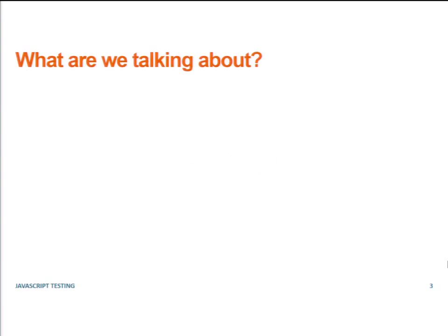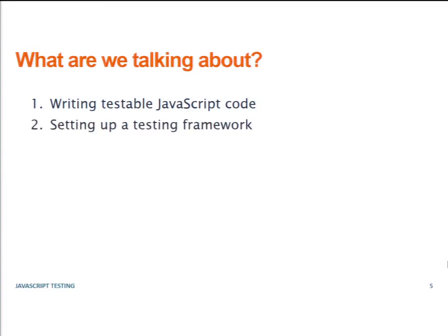What we're going to talk about today: first, we have to talk about writing testable JavaScript code. Most people who want to test their JavaScript are not actually writing testable code — they're writing code that is nearly impossible to test on an individual basis. We don't want to test end-to-end every time; we want to test individual functionality, and to write unit tests, you have to write code in a testable way. Then we'll talk about setting up a testing framework, writing tests, and a little bit on automation at the end.